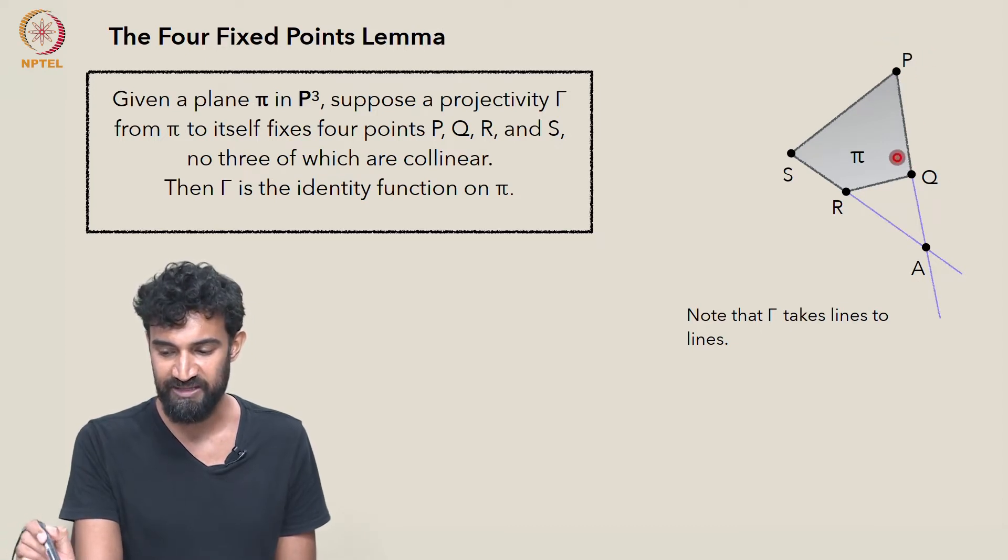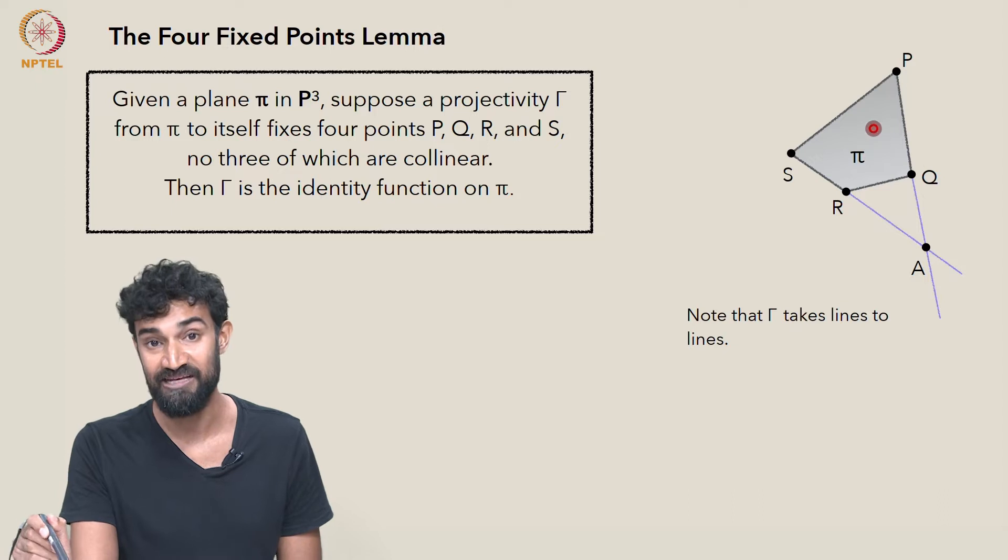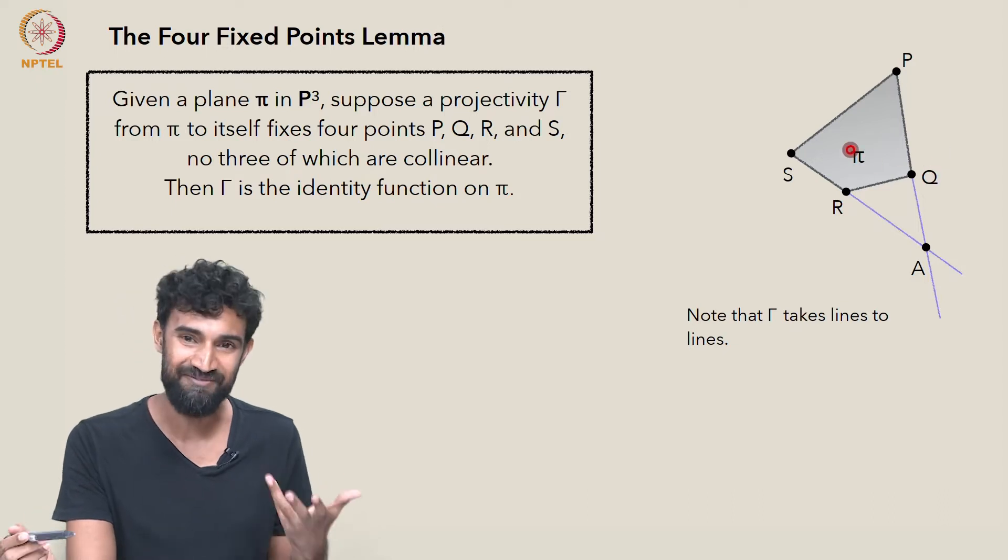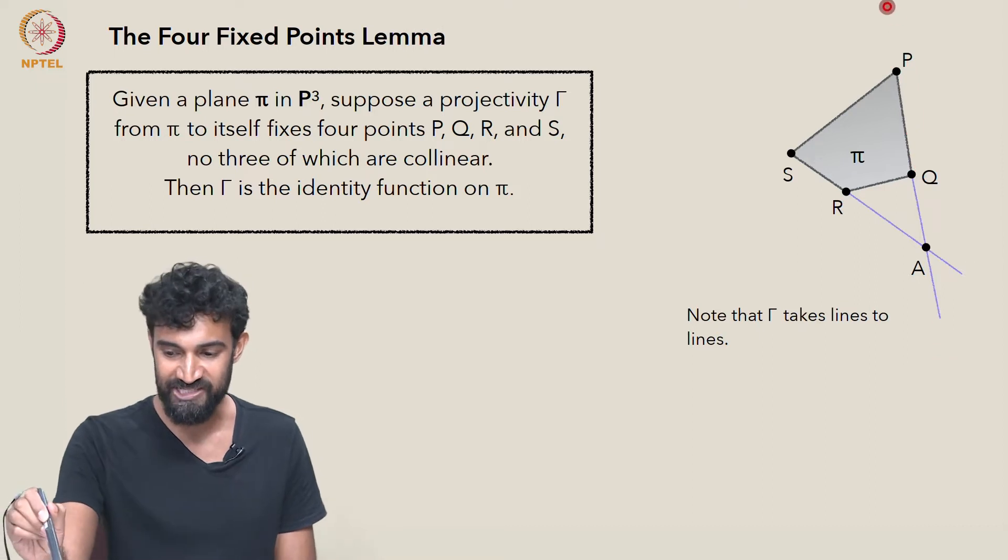So γ of P is P, γ of Q is Q. So γ of this line will contain P and Q. It'll be a line containing P and Q. There's only one. So γ of this line is just this line.